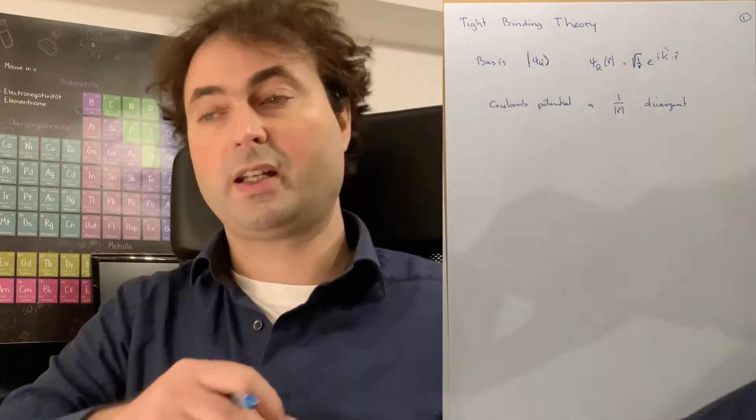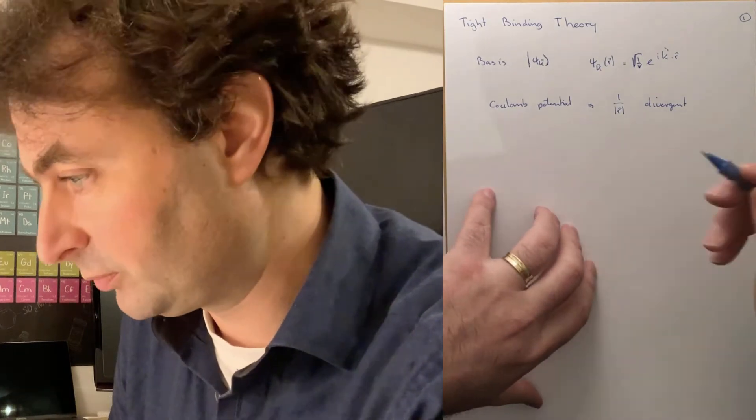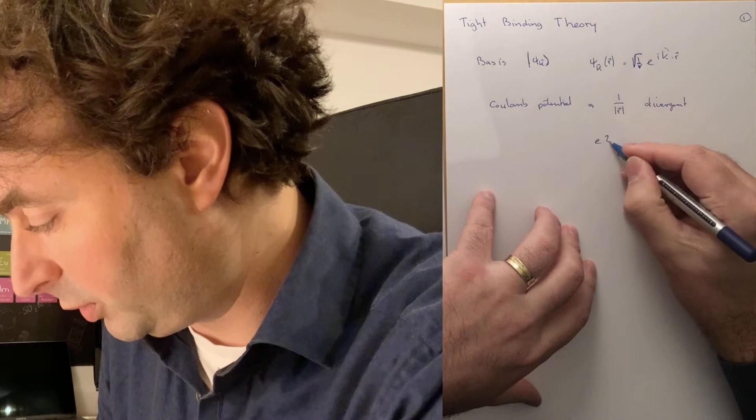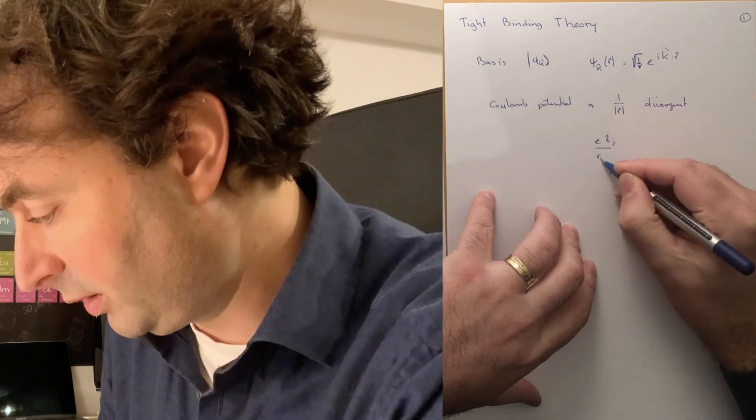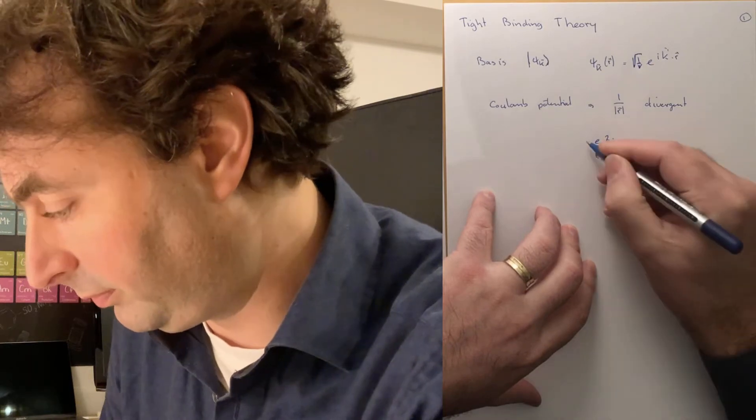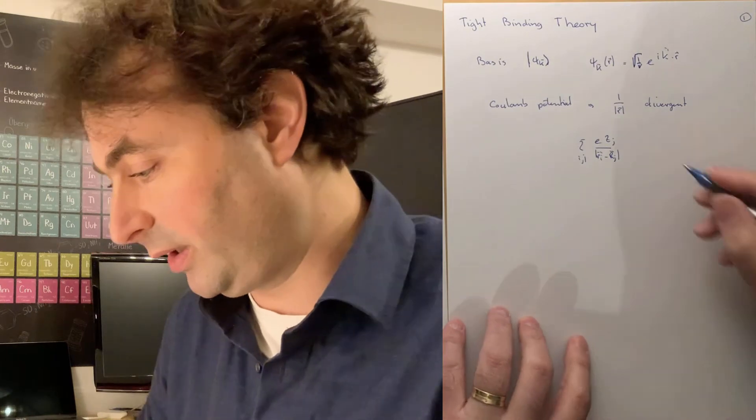So if I have a set of atoms, then when my electron sits at the nucleus, the potential is divergent. So this is a general form of the ri minus capital Rj, for example. So the interaction between the electron and all the atoms.